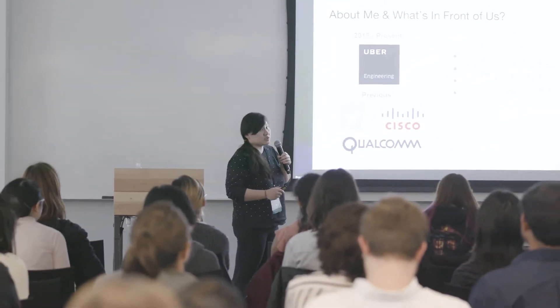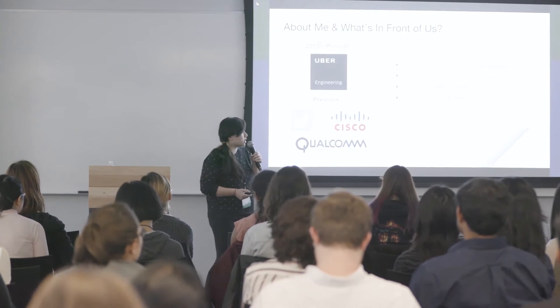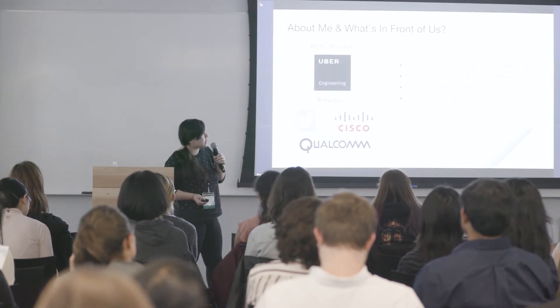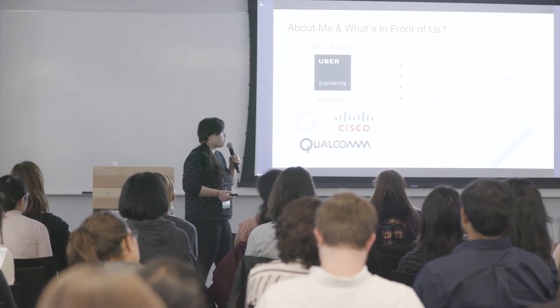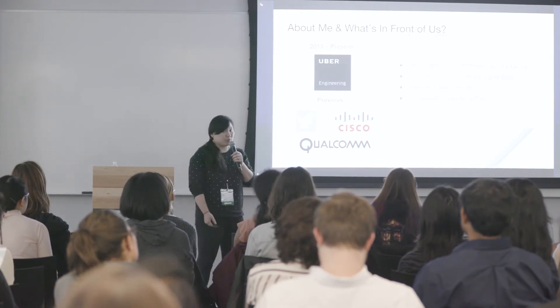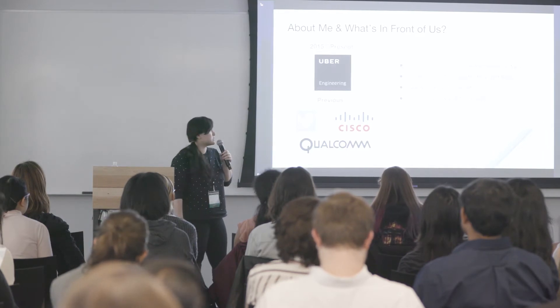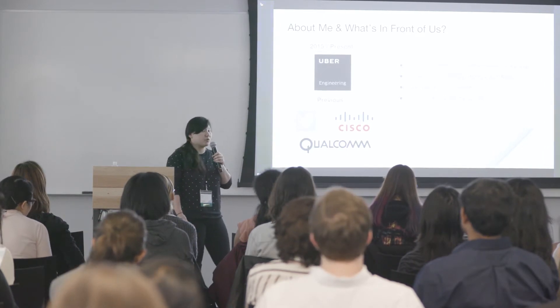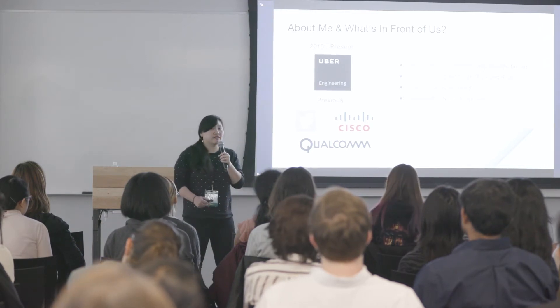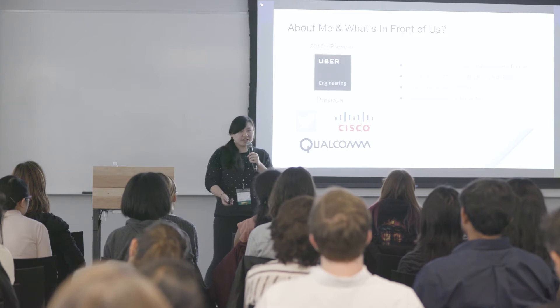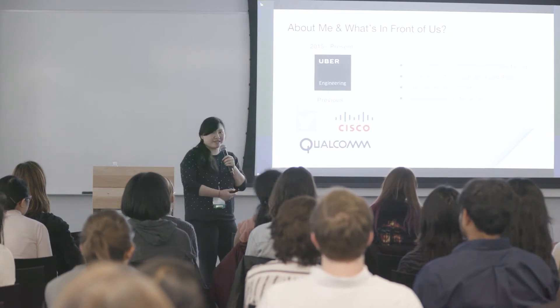We're going to talk about Uber numbers and show you what scale Uber is operating at and what are the challenges and motivations we're facing from our operation work. Then we'll take an overview of the internet IPv4 status and the IPv6 deployment status overall. Then we'll deep dive into Uber's IPv6 deployment, analyzing Uber's network architecture and software and vendor support. And last, we'll talk about the challenges, lessons learned, and a call for action — how everyone here can help us during this process.